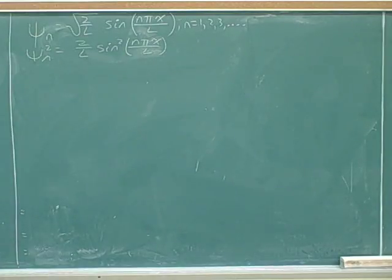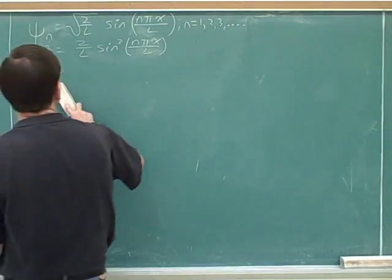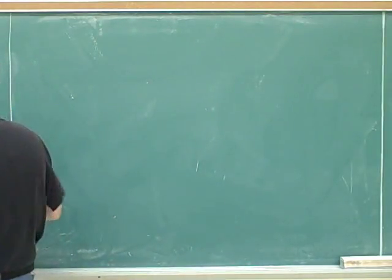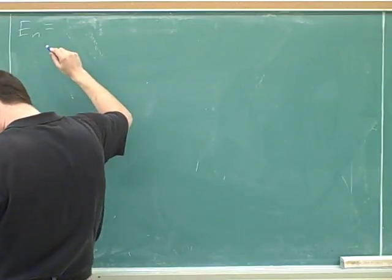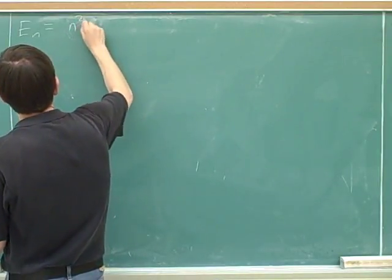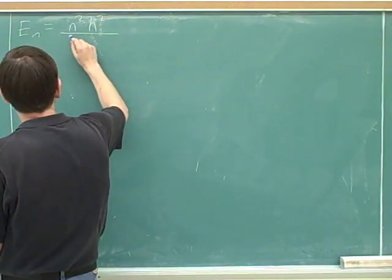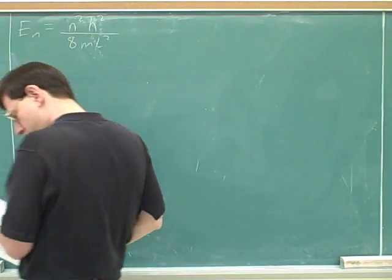V equals n squared h squared over 8nl squared. Right. So I'm going to erase the sine functions because I don't think we need the sine functions anymore. But for the infinite square well, in our textbook, it tells us that energy level n is n squared times h squared divided by 8 m l squared.